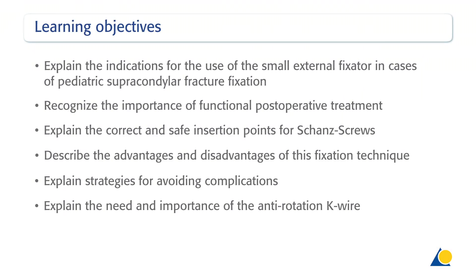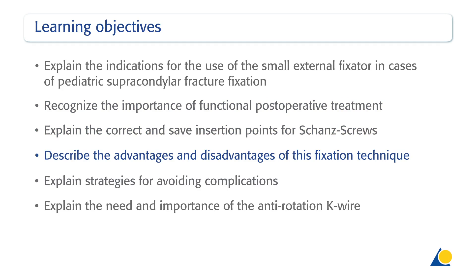Upon completion of this exercise, you should be able to: Explain the indications for the use of the small external fixator in cases of paediatric supracondylar fracture fixation. Recognise the importance of functional postoperative treatment. Explain the correct and safe insertion points for shunt's screws. Describe the advantages and disadvantages of this fixation technique. Explain strategies for avoiding complications. Explain the need and importance of the anti-rotation K-wire.